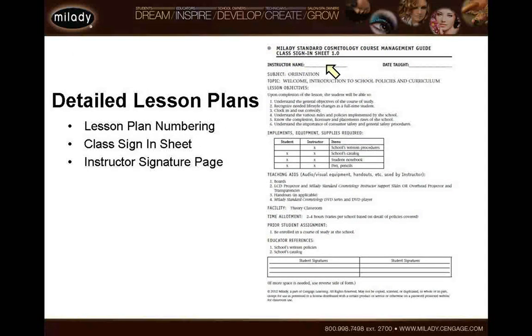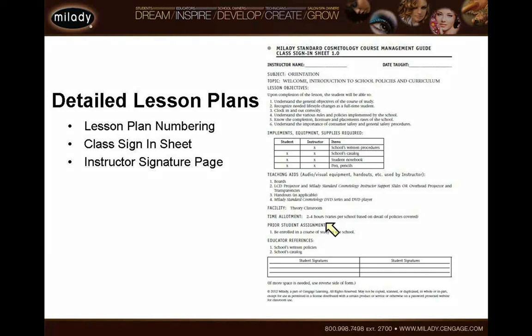The first page is called a class sign-in sheet. It identifies the lesson objectives, the tools and implements required by both the student and the instructor, teaching aids you need, the facility, and time allotment. This course management guide is written for 50 different states — some states with as few as 1,000 hours, many states over 2,000 hours. So you have to allot the time based on your schedule. A 1,000-hour program will spend much less time on some subjects versus a 2,000-hour state. This is a suggested time allotment based on the details you set up in your own curriculum and school.